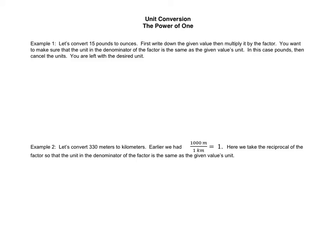Let's take example number 1: convert 15 pounds to ounces. First we write down 15 pounds. We know that 16 ounces is equal to 1 pound. Since we want to convert to ounces, we multiply by the conversion factor with 16 ounces in the numerator — because we want ounces as our final units — divided by 1 pound.